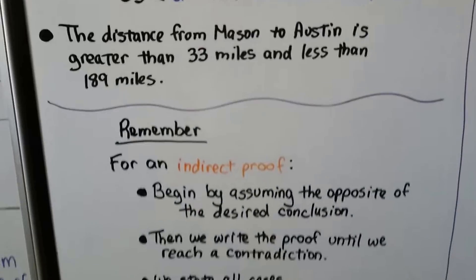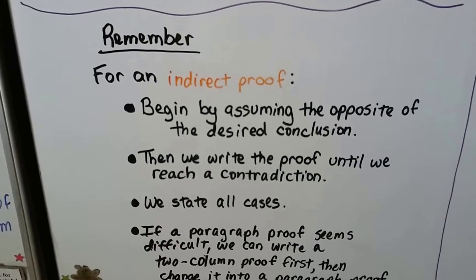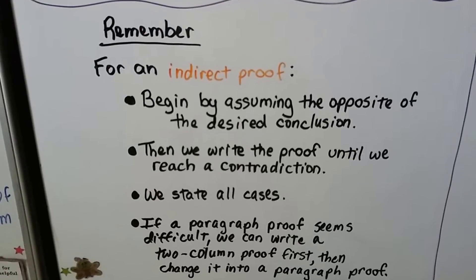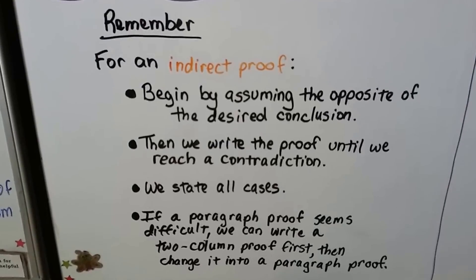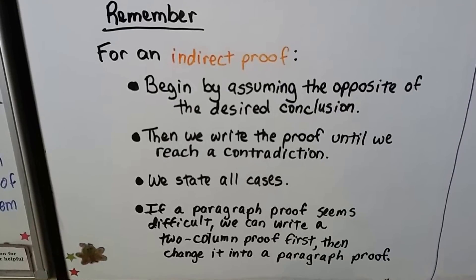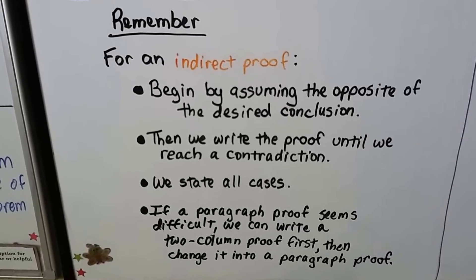Remember for an indirect proof, we begin by assuming the opposite of the desired conclusion. Then we write the proof until we reach a contradiction. We have to state all cases. And if a paragraph proof seems difficult, we can write a two-column proof first, then change it into a paragraph proof.